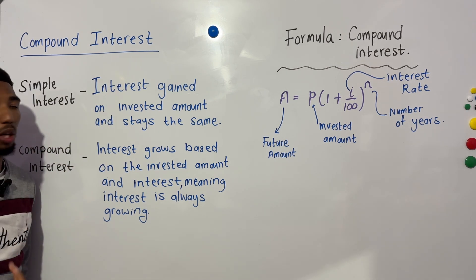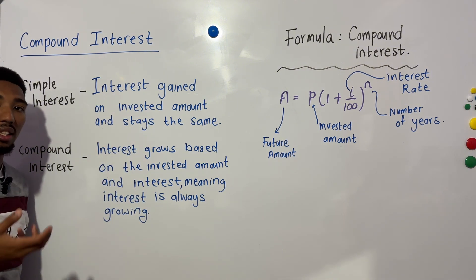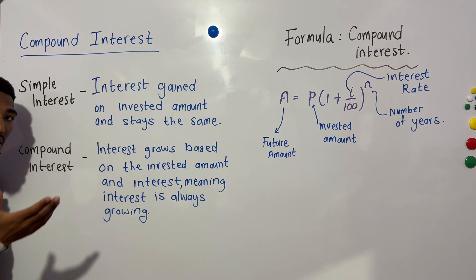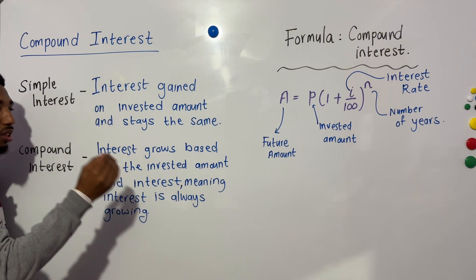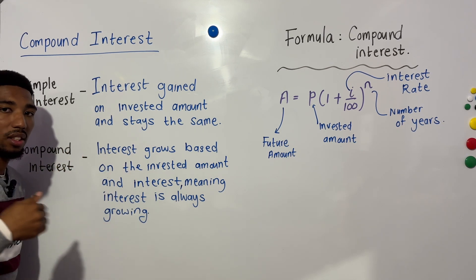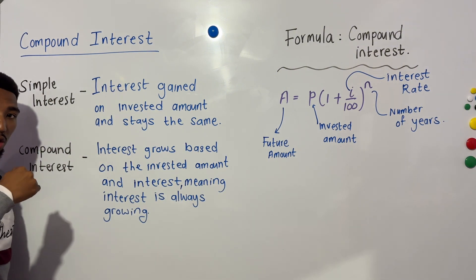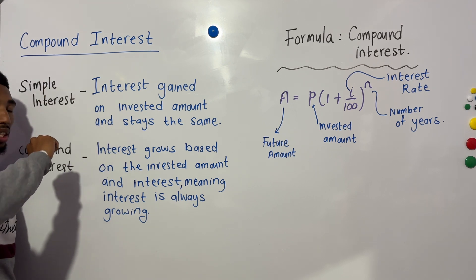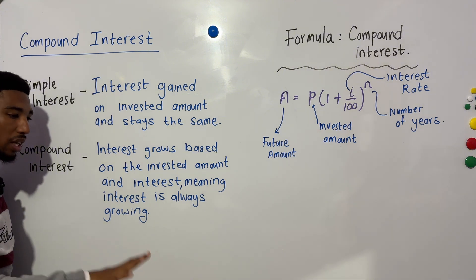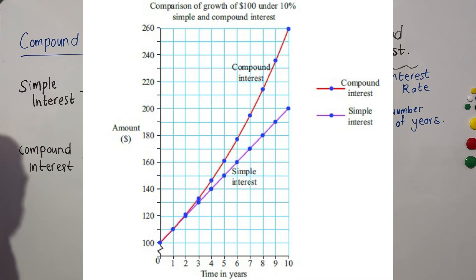So for simple interest, the interest will stay the same. For example, if the interest amount is 100 rand, every year your invested amount will increase by 100 rand. However, with compound interest, depending on the rate, compound interest will grow based on the previous value. So if in the first year the interest was 100 rand, in the second year it could be 150 rand, and the third year could be 200 rand. The interest is increasing every year, whereas with simple interest it would remain 100 rand for however many years you are investing.